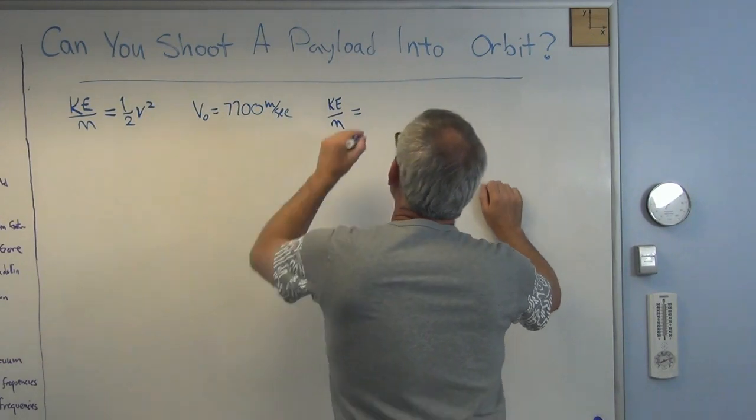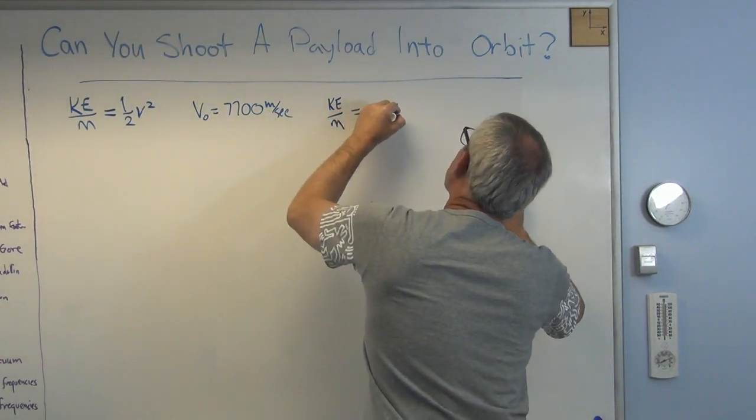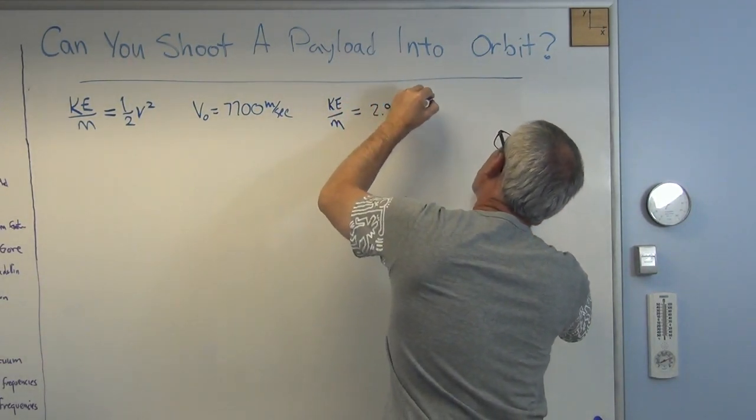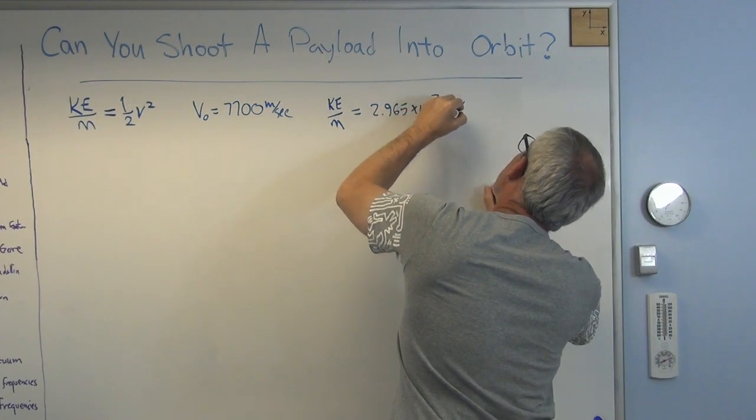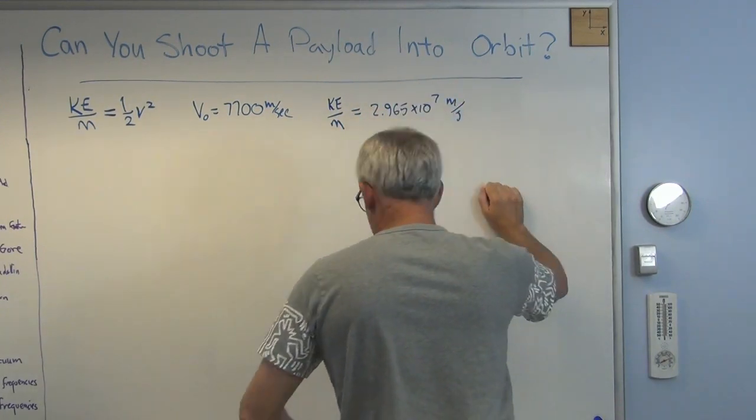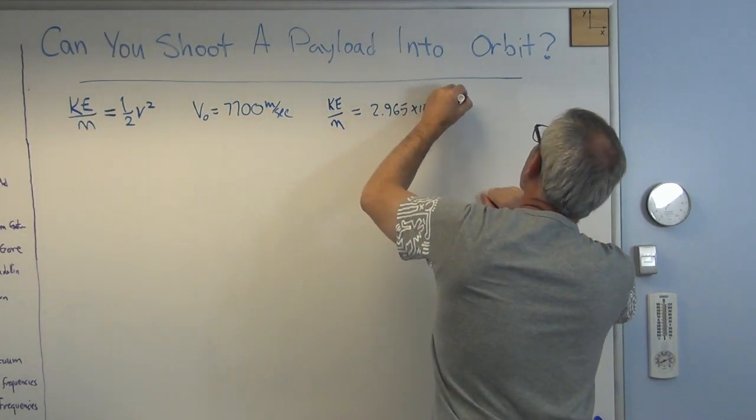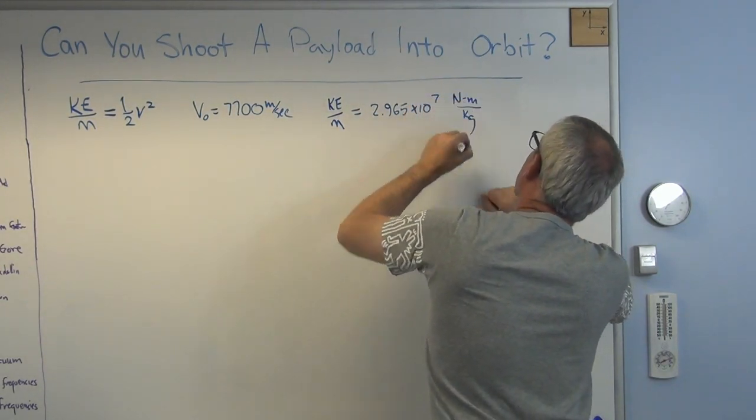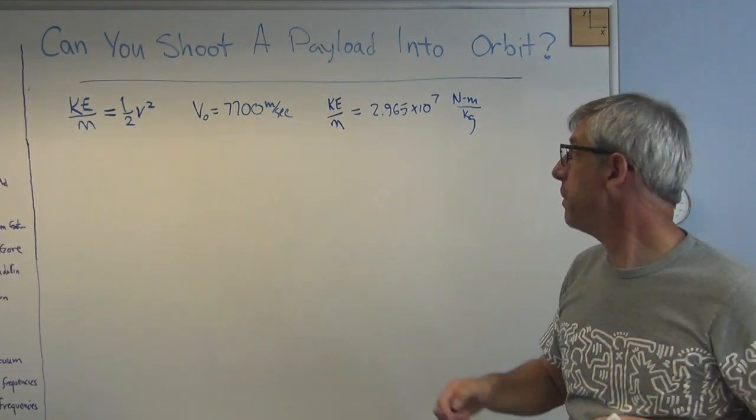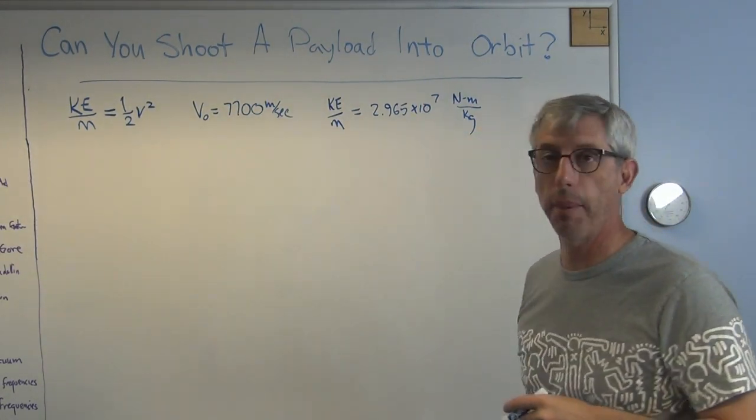And so KE per unit mass in low Earth orbit is 2.965 times 10 to the 7th, not meter, newton meters per kilogram. That's the amount of kinetic energy per kilogram.